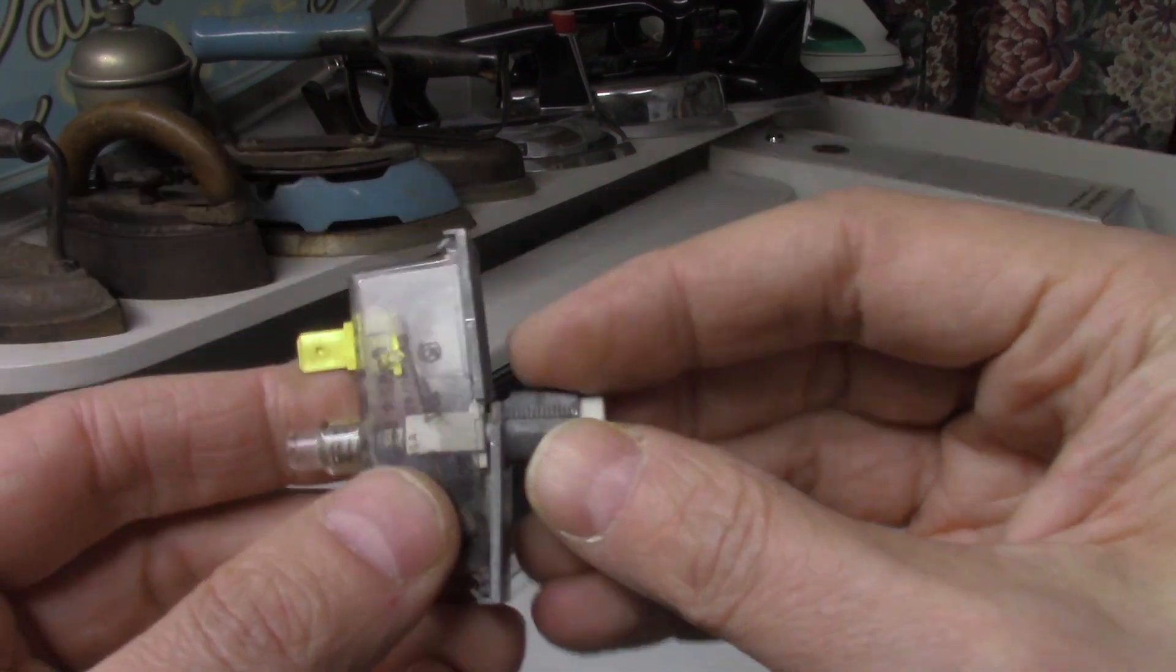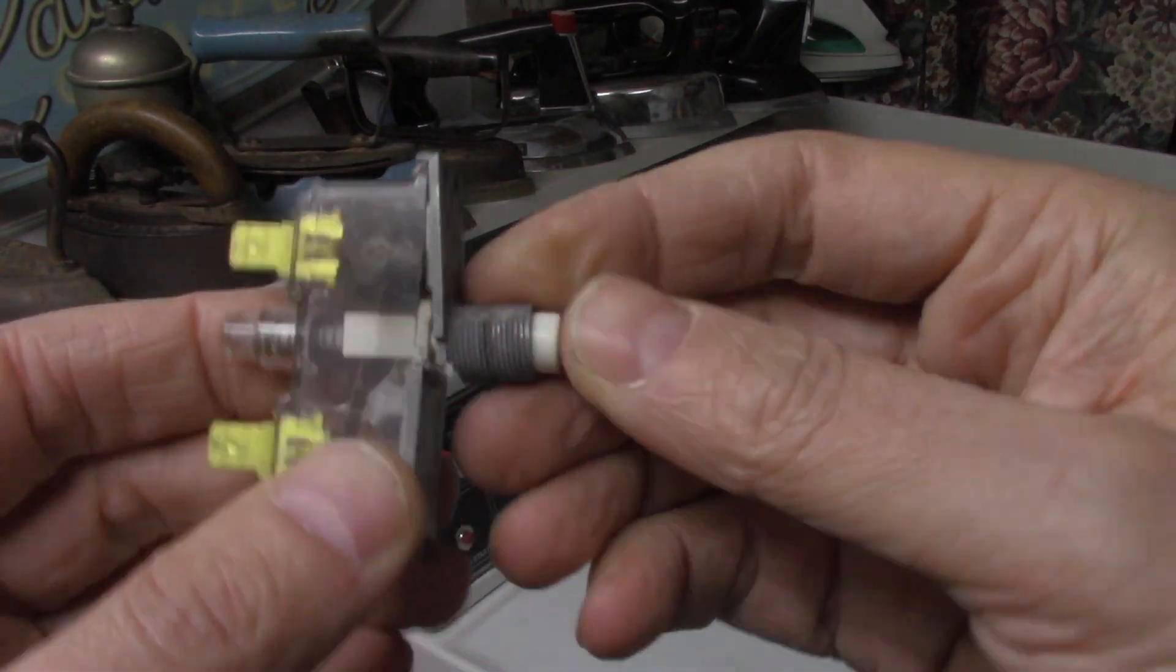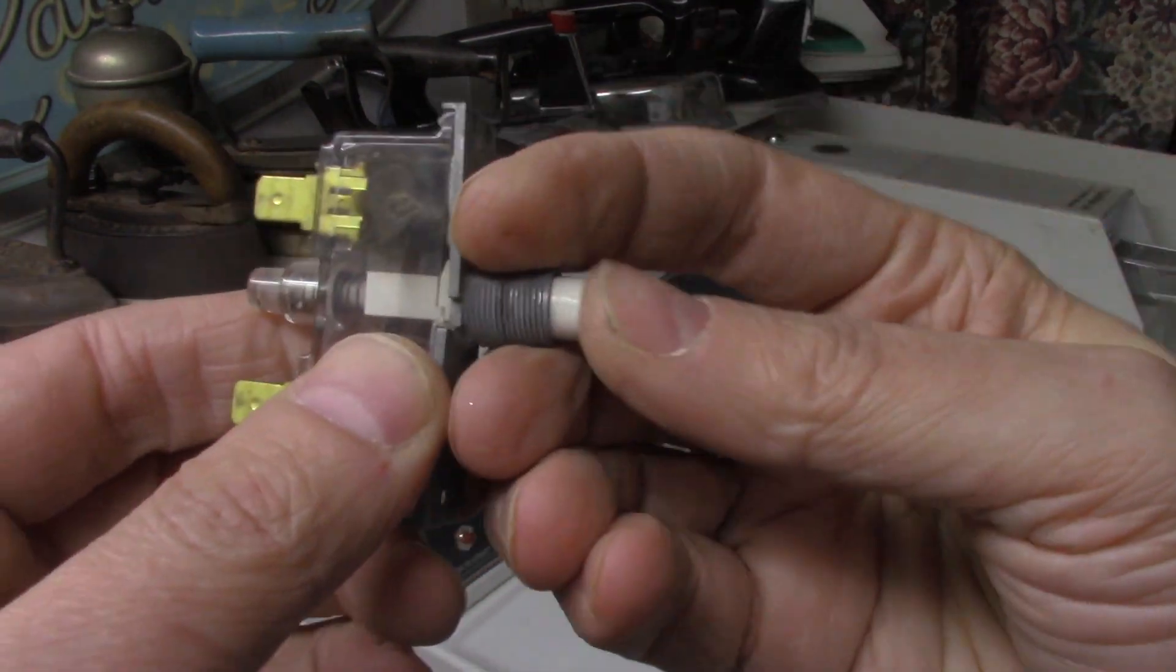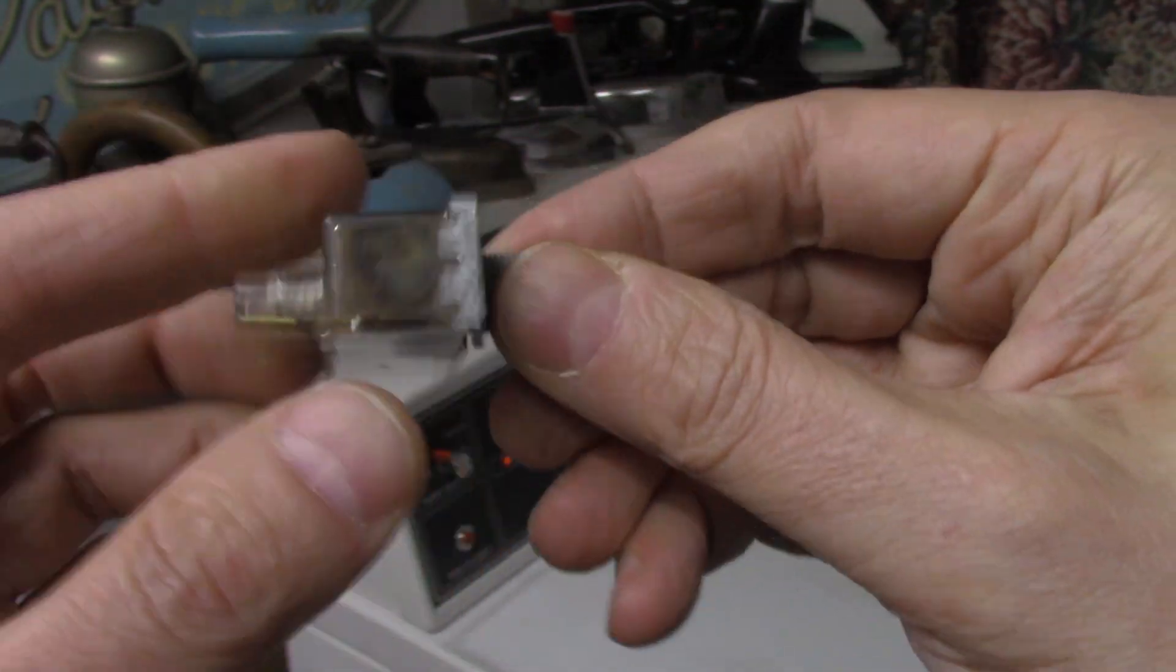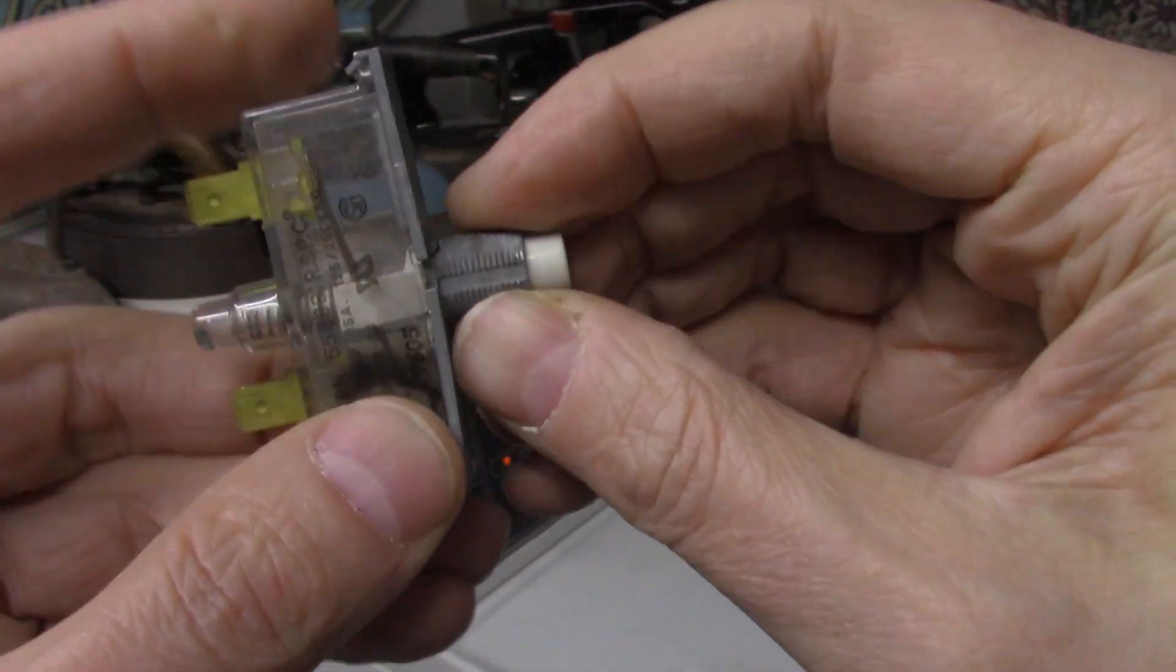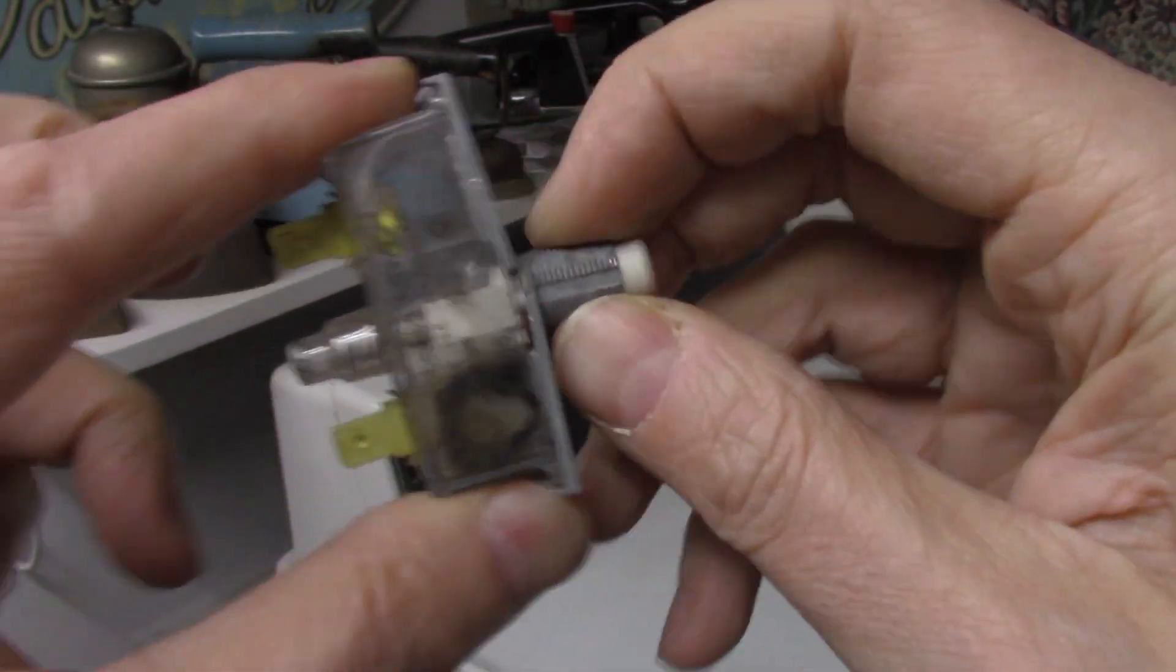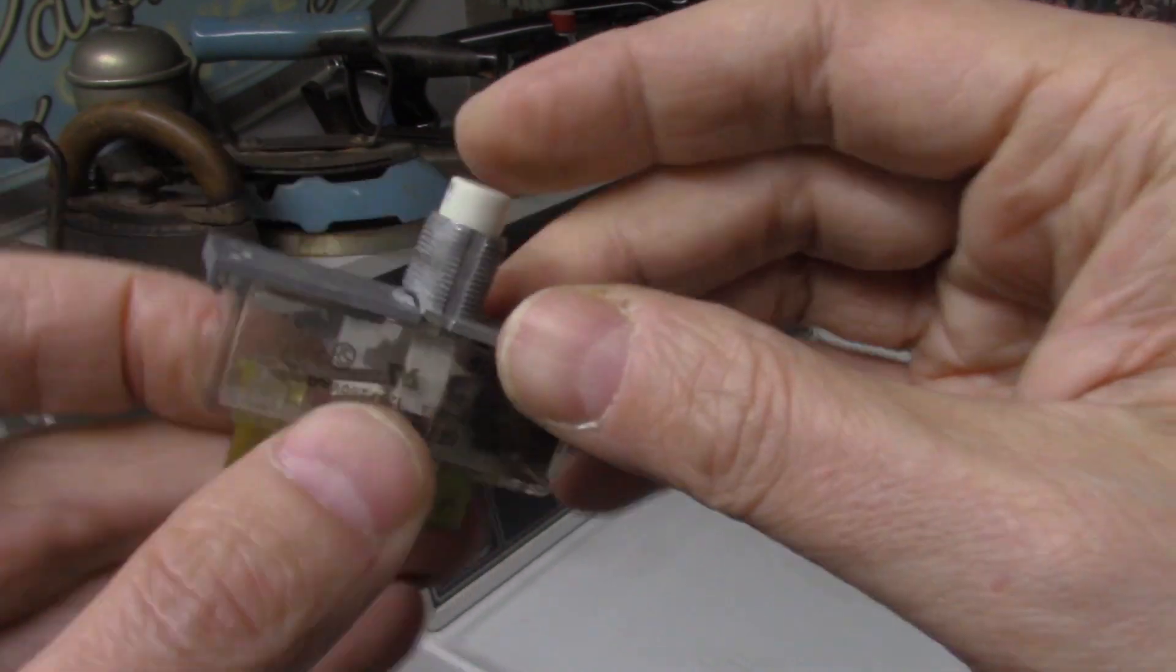In a busy, heavy use environment like rental housing, people will be pressing real hard on the switch. Vandals might even press it real hard just to break it. Over time, the die cast metal will weaken and fall apart like this one.